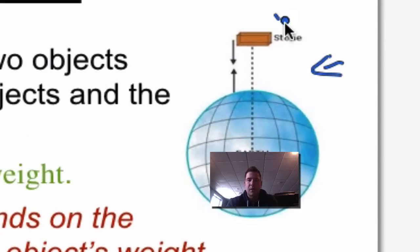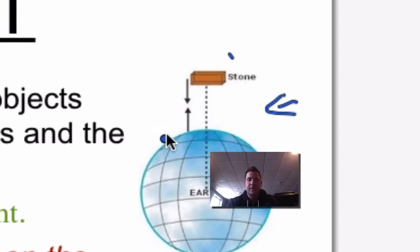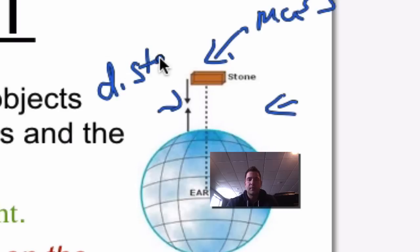The mass of this object, this stone, the gravitational force is going to be dependent on the mass of that stone, and also the distance with these arrows. So we have the mass, and then here we would have distance. That is going to determine what our gravitational force is.